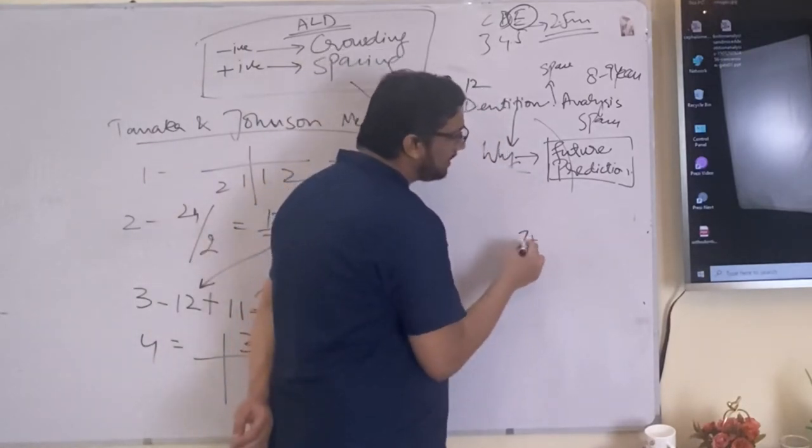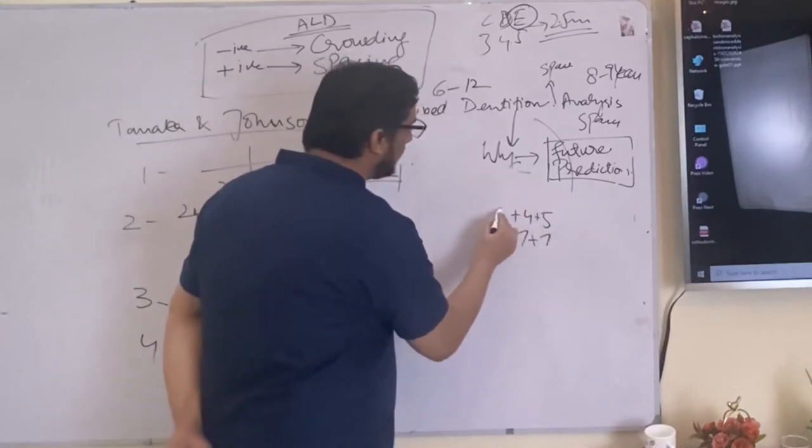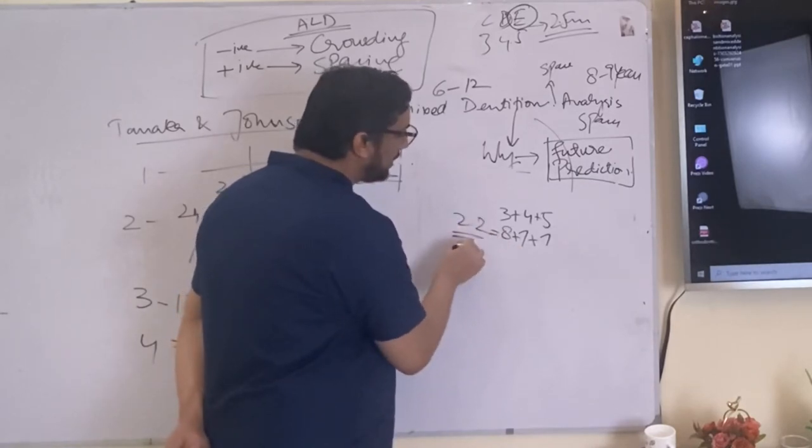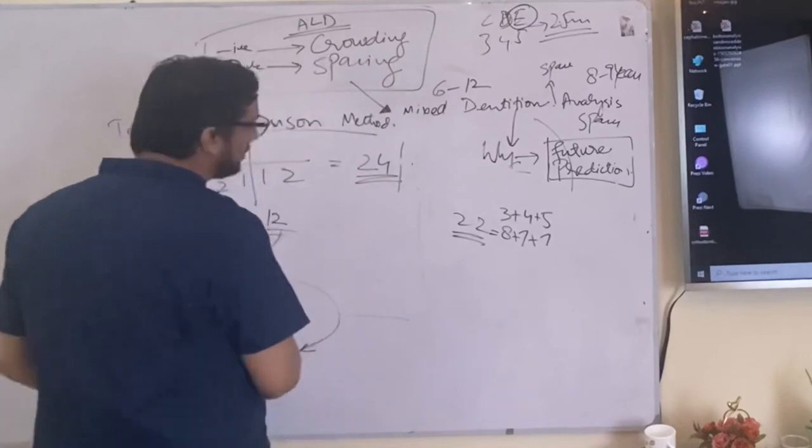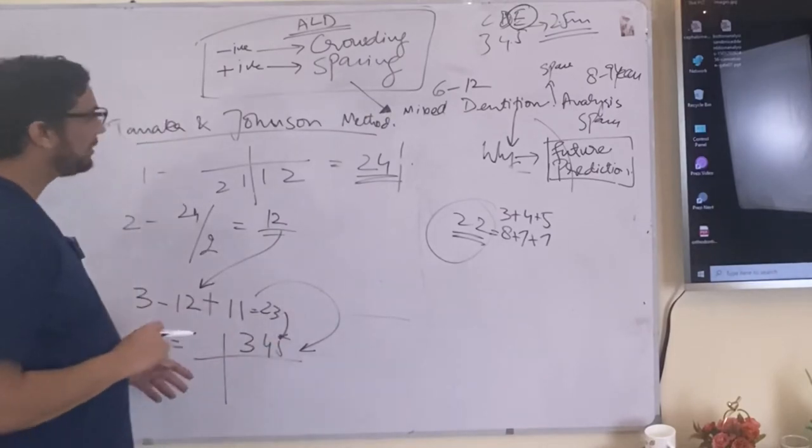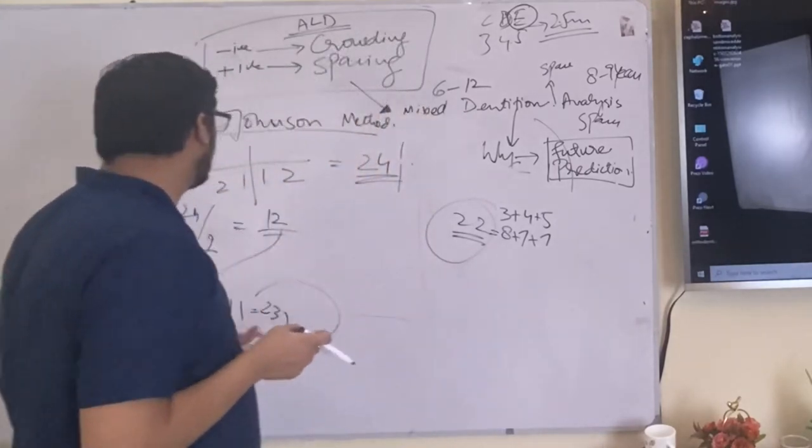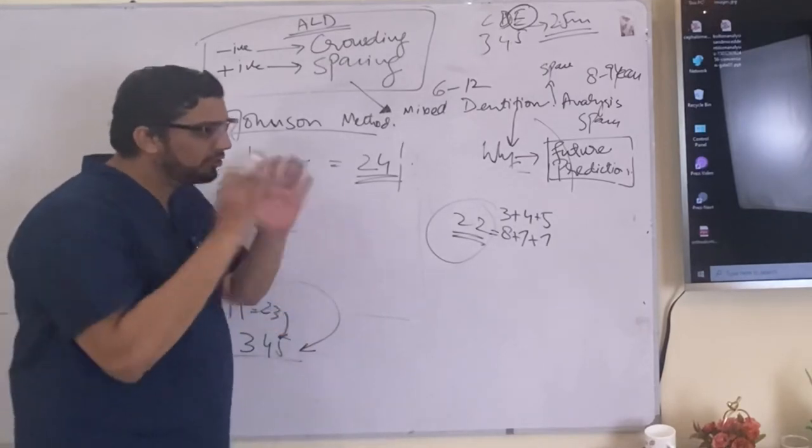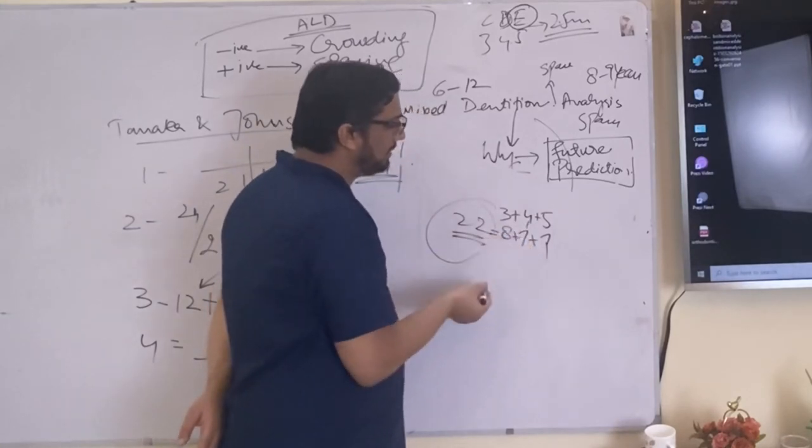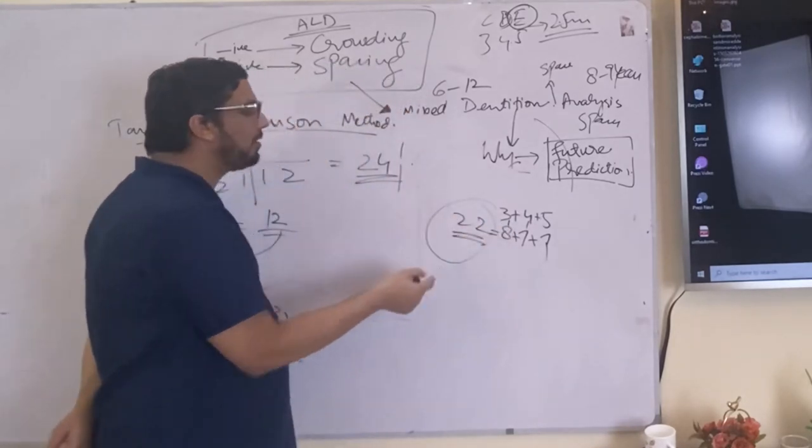The average mesiodistal width of 5 is 7, the average mesiodistal width of the canine is 8. So your answer of this Tanaka and Johnson should be vary around this value. It should not be like that 48, 53, 64, 71 or 11, 12, 6. The answer logically: because the mesiodistal width of 5 is 7 on an average population, the mesiodistal width of the 4 on average population is 7, the mesiodistal width of the canine in average population is 8, so your answer should be around 22.